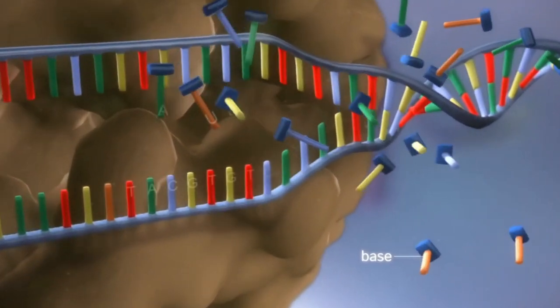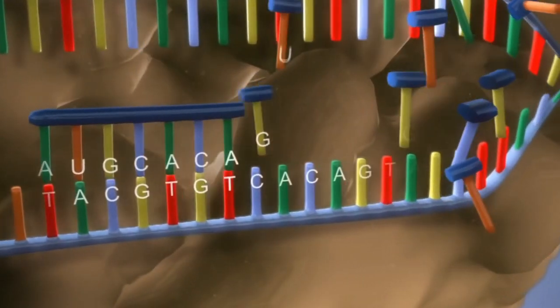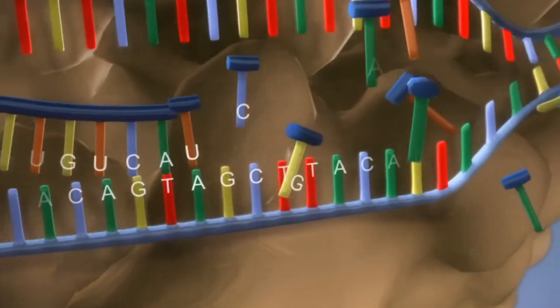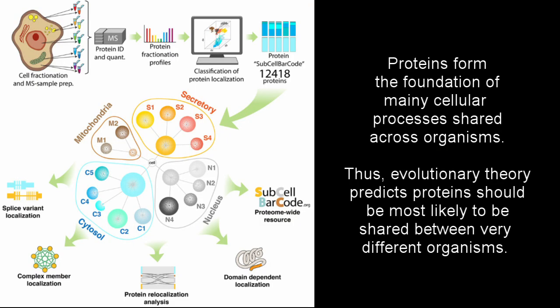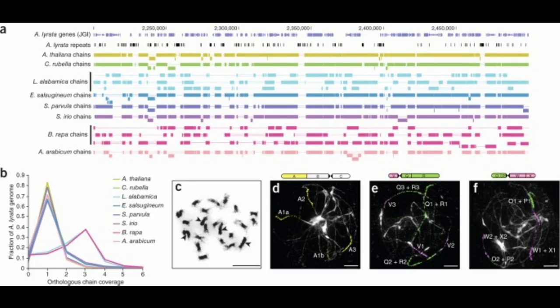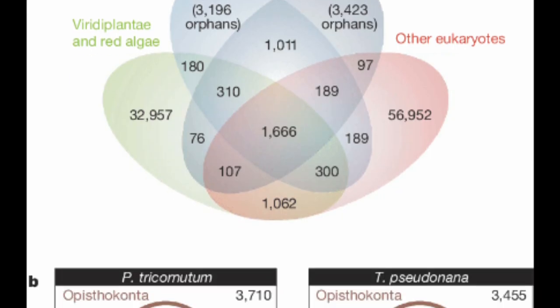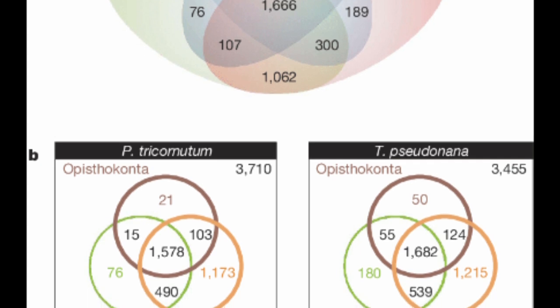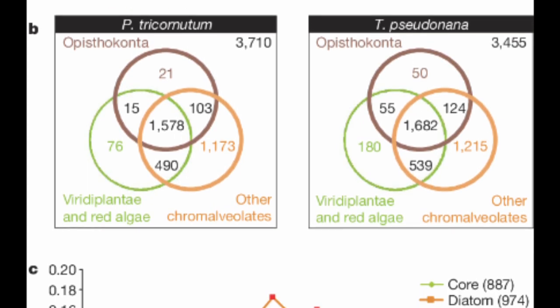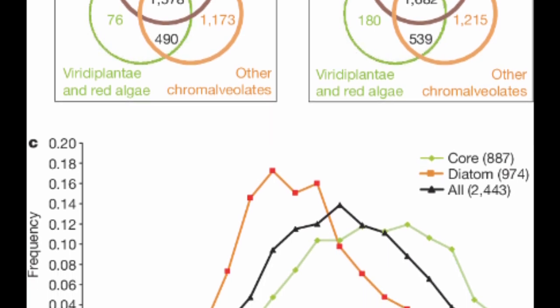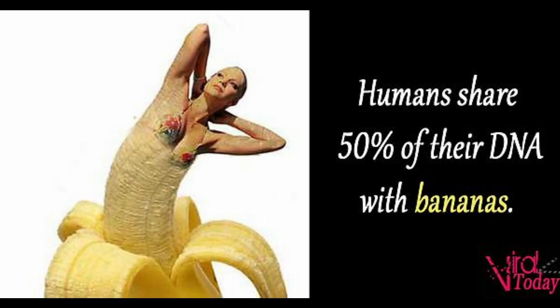Genes, or DNA sequences, encode for proteins. Proteins are slower to evolve and change than DNA is due to the redundancy of the genetic code. Thus, proteins are the genomic feature most likely to be conserved between evolutionarily distant species. While other genomic features such as non-coding regulatory sequences or non-coding RNA can be conserved over long evolutionary distances, they are far more likely to diverge in sequence than proteins are. Other genetic features such as transposable elements or intergenic "junk" DNA are even less likely to be conserved, as their sequences are under less selective pressure and accumulate mutations at an even higher rate. So where did that 50% number come from?